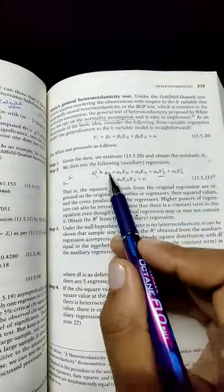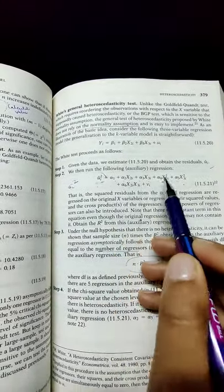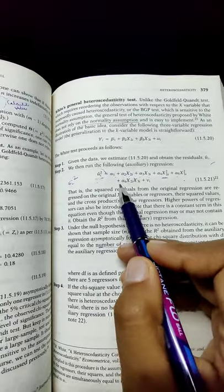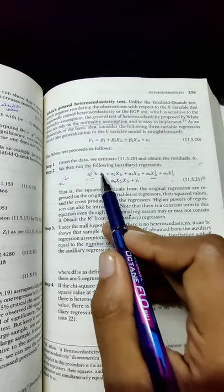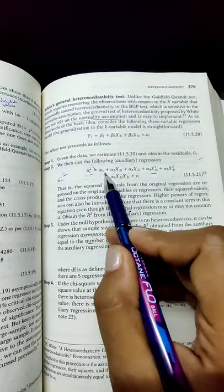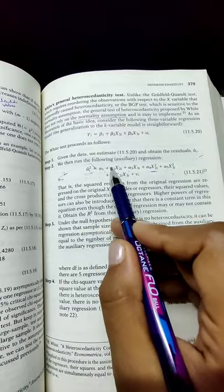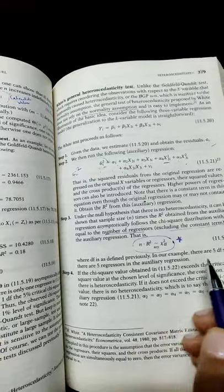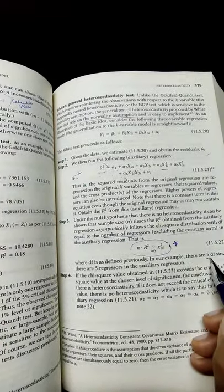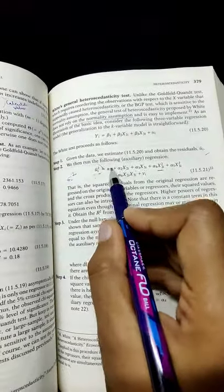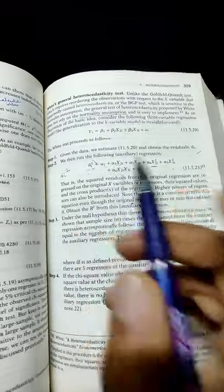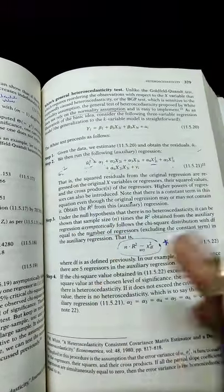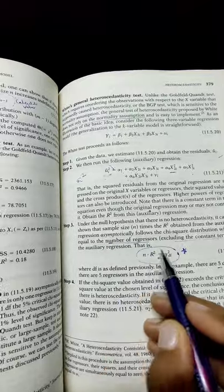These are the regressors. Excluding the intercept term, if we leave alpha 1, how many terms are there? Degrees of freedom is 5. Total number of regressors is 6 minus 1 equals 5. Exclude which term? The intercept term.